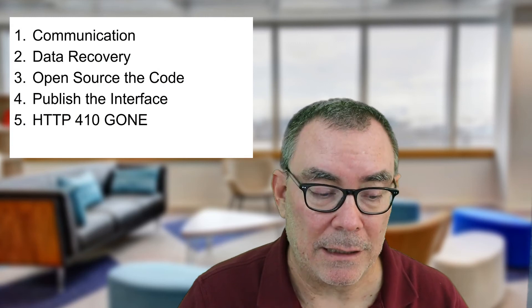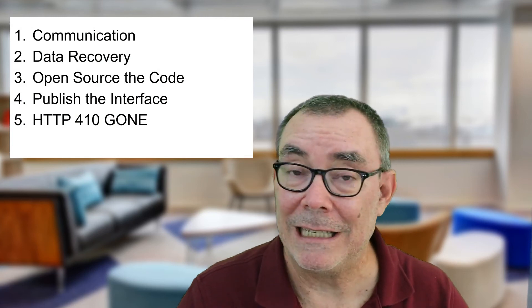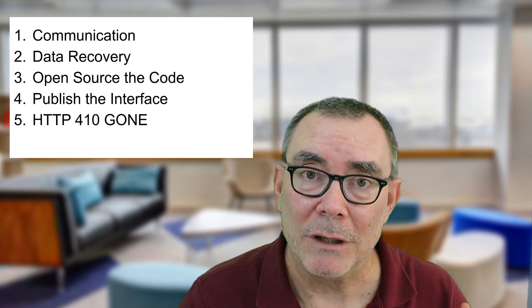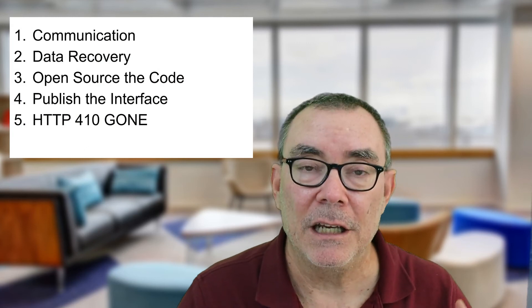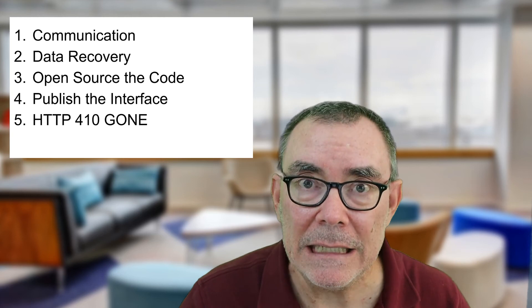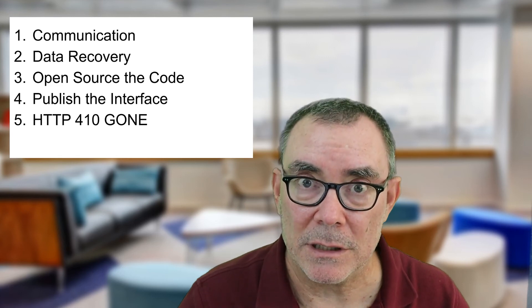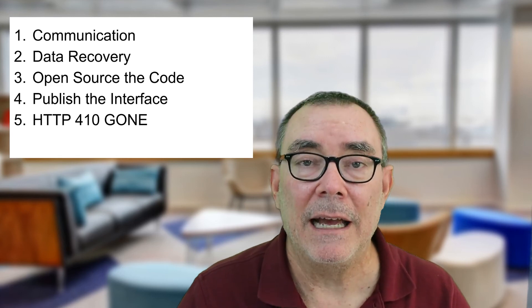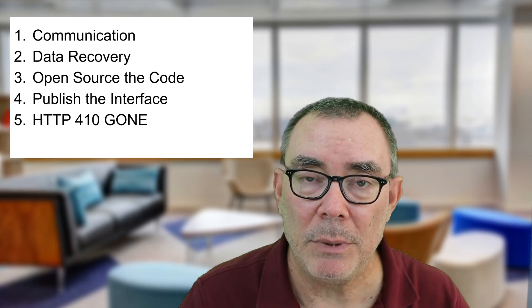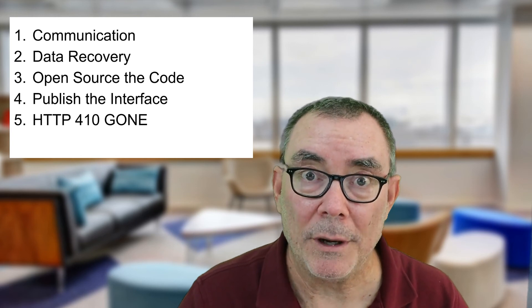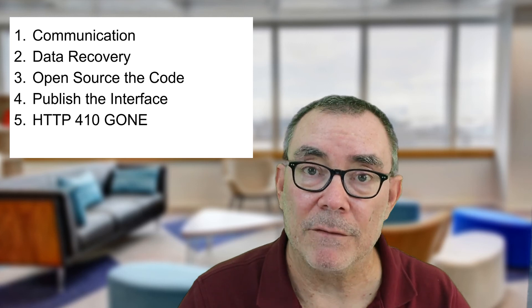So that pretty much sums it up. Make sure you communicate, and communicate in a timely way. Allow people to recover their data using a utility or some other means. If you can, open source the code so other people can take it on. If you can't open source the code, at least open source — or put in Creative Commons or public domain — the interface: the documentation, the diagrams, the descriptions, the formats, and the other elements. And then finally, once you do shut it down, mark your API as 410 Gone for all endpoints, with enough information pointing to where somebody can find the interface, find the code, or find other alternatives. Those are the steps it takes to properly shut down a production API.